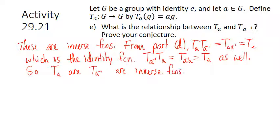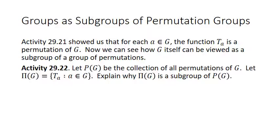From the last activity, for each A in G the function T_A is actually a permutation of G — we showed it's both an injection and a surjection, making it a bijection. Any bijection from a group to itself is a permutation — a rearrangement of those elements. So we can identify each element in the group with a permutation of the group, and view the whole group as a group of permutations. Let P(G) be the collection of all permutations of G, and let pi(G) be the collection of all those T_A maps. We need to explain why pi(G) is a subgroup of P(G).